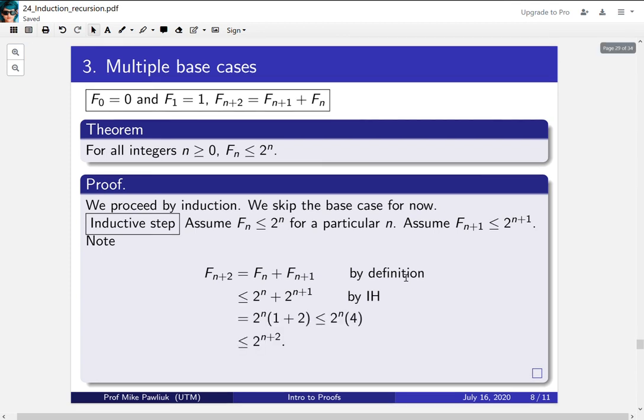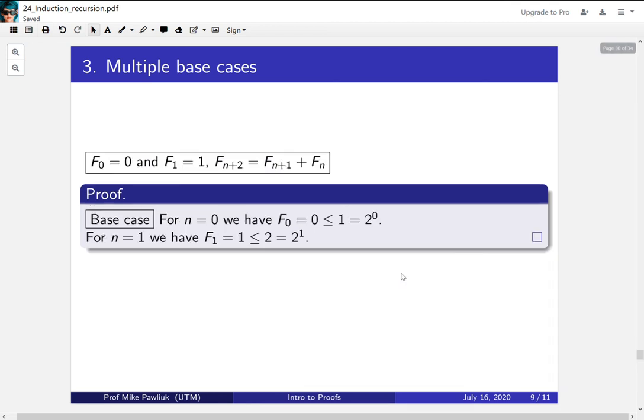This is a little bit of algebra, but eventually you'll get it. So you factor out the 2 to the n, and then you use the fact that 3 is less than 4.